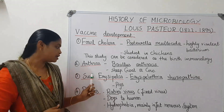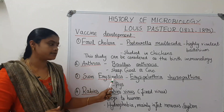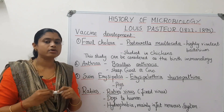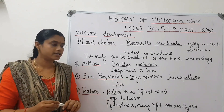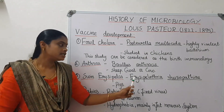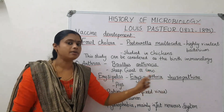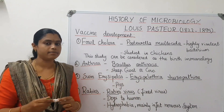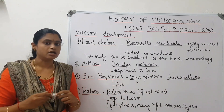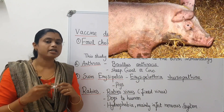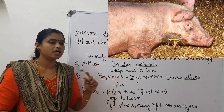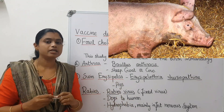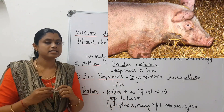Next is Swine Erysipelas. It is caused by the microorganism Erysipelothrix, a bacteria. It affects pigs, and two vaccines were developed against it.